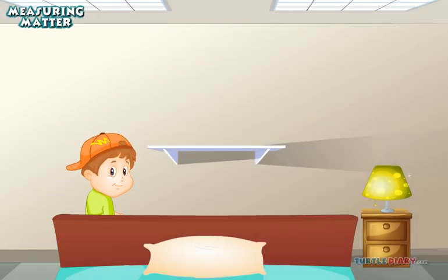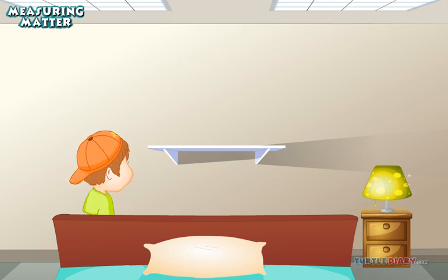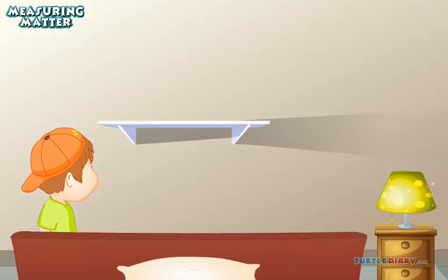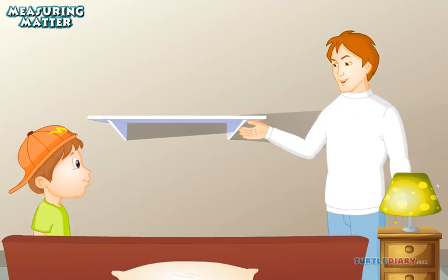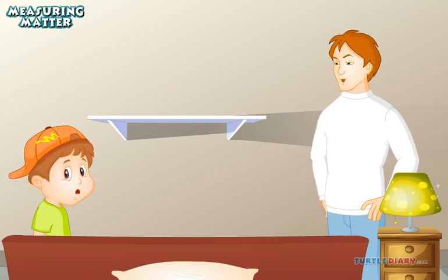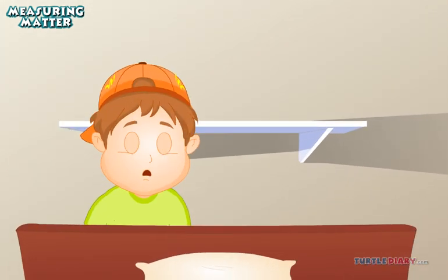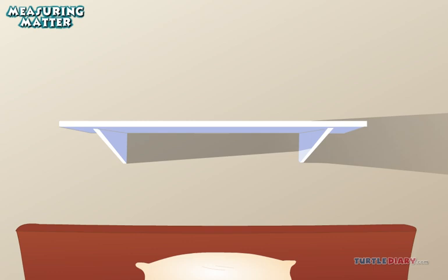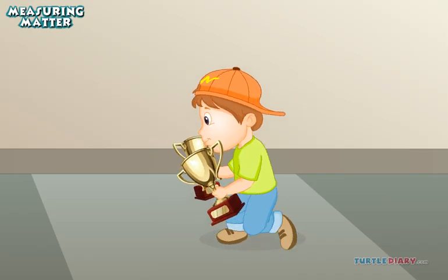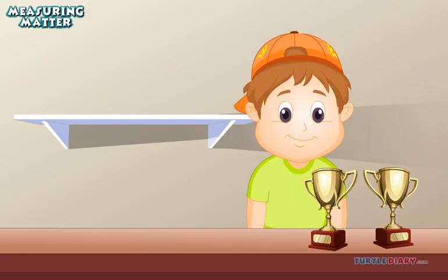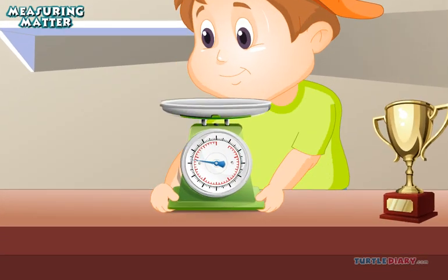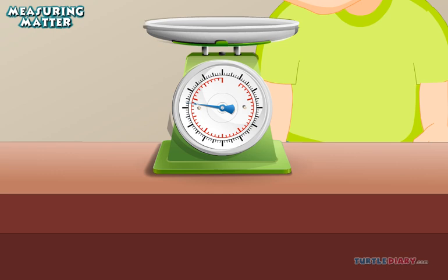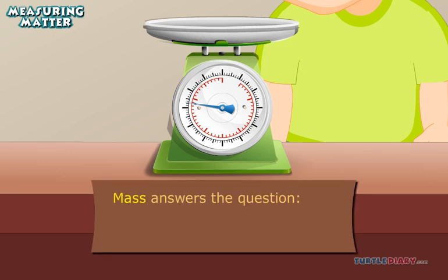Matt has a little shelf on the wall. He wants to put all his sports trophies on it, but his dad said it's not a very sturdy shelf, so he can't put anything heavy on it. How will he know what should go there and what should not? Matt needs to measure the mass of the trophies. Mass is another way of measuring matter. Mass answers the question: how much matter does the object have in it?